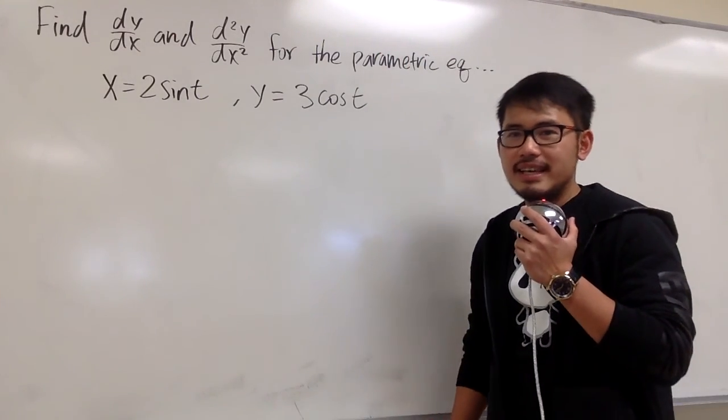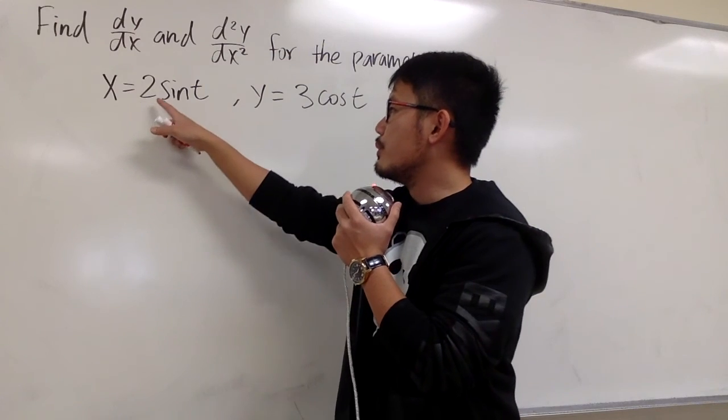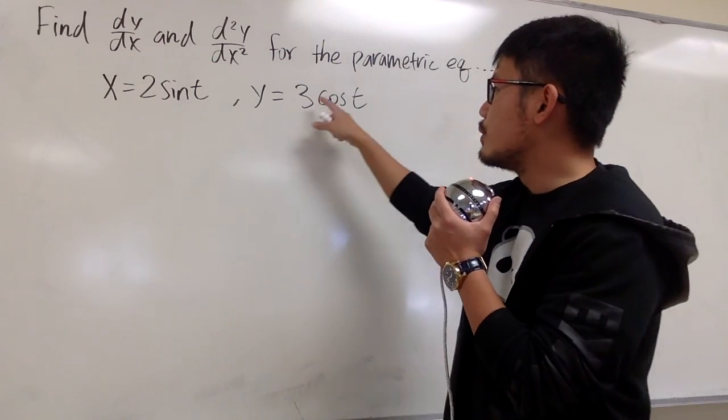We are going to find dy/dx and d²y/dx² for this parametric equation, x equals 2 sin t, and y equals 3 cos t.